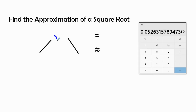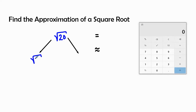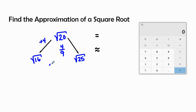Our next one is radical 20. Let's clear out the calculator and ask ourselves — it falls in between the square root of 16 and the square root of 25. So the distance between 20 and 16 is 4, and the distance between 16 and 25 is 9. So our fraction is going to be 4 over 9. The approximate value is 4 and 4 ninths, since radical 16 simplifies to 4 and it's between 4 and 5.